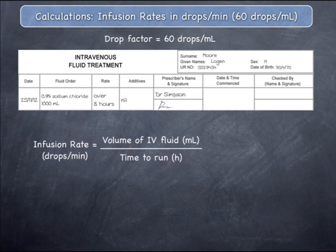In this example, we will consider a time in hours, multiplied by the drop factor, divided by 60 minutes per hour.